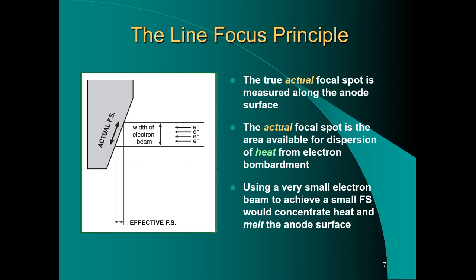However, it has some effects on image quality. A smaller actual focal spot would equal a smaller effective focal spot, increasing image quality but giving us less heat dissipation. Using a very small electron beam to achieve a small focal spot would concentrate the heat and potentially melt the anode. So we have to strike a balance between focal spot size, which affects image sharpness, and heat dispersion. We're making a large amount of heat in these x-ray tubes.